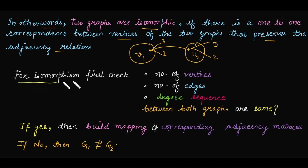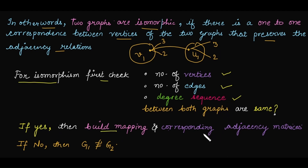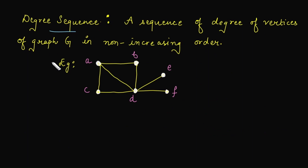Next we will learn how to check whether graphs are isomorphic. The first step is to check if the number of vertices are equal in both graphs, then check if the number of edges are the same, then check if the degree sequence is the same. If yes, we build the mapping and verify using the adjacency matrix. If no, we clearly say G1 is not isomorphic to G2. The degree sequence is the sequence of degrees of vertices of graph G arranged in non-increasing order.